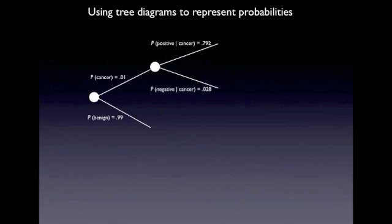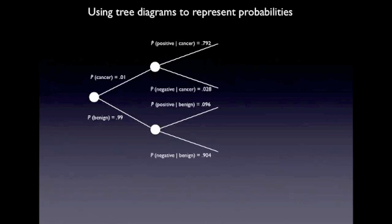From the topmost branch of the tree, we can add two further branches, indicating the probability of getting a positive diagnosis when cancer is present, and the probability of getting a negative diagnosis when cancer is present. Those should add up to 1: 0.792 added to 0.208 add up to 1. Then in the lower half of the tree, again, positive and negative diagnoses conditional upon the lump being benign.